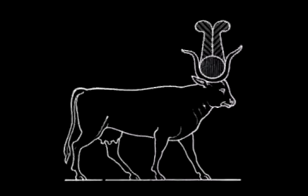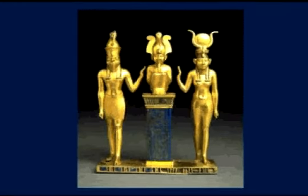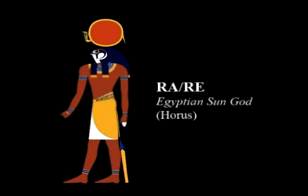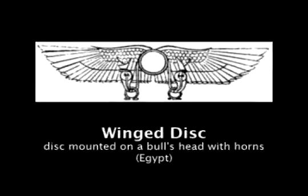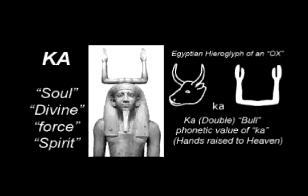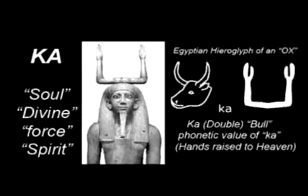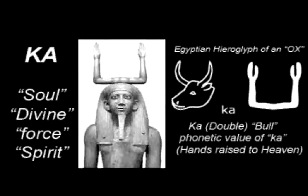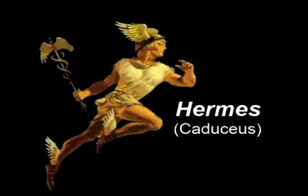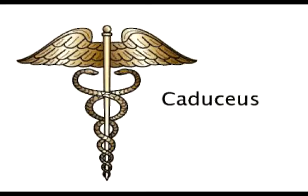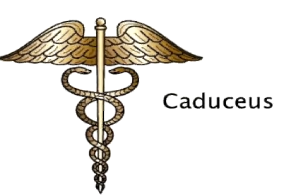And we find this same symbolism in the ancient Egyptian winged disc with horns from the sacred bull — thus the golden calf, or the sun god Ra. So we have the connection of the winged disc with bull horns with the Ka, which is also the double symbolism of the bull horns that is the crown on top of the head. Thus, we have the connection with the bull and Hermes and the Caduceus, Ka or Ca.